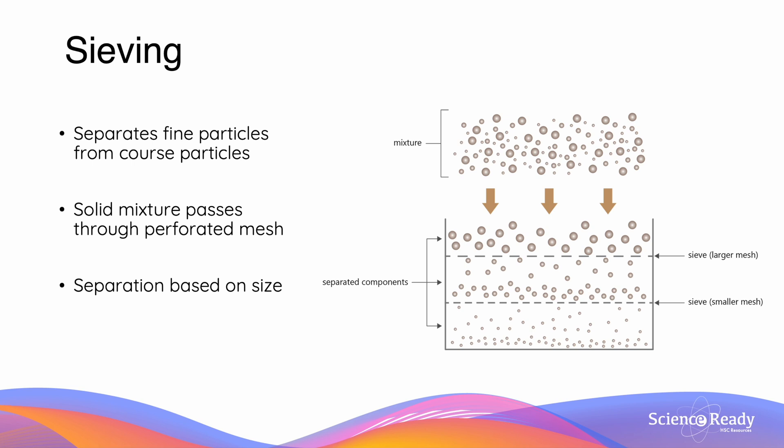The first technique that we'll look at is sieving. Sieving is a technique used to separate fine particles from coarse particles. The sieve itself is a perforated mesh of different sizes. As we can see on the diagram on the right hand side, particles which are too large are unable to fit through the mesh and thus become trapped in their layers.